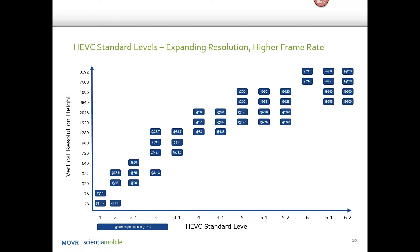What we actually deliver back to the device once we've identified that it can use HEVC is based on the standard level. There are different standard levels — 1 through 6, 6.1, 6.2 — and the standard continues to evolve. The higher you get in the standard level, the larger the resolution. For example, at standard level 4, it has the ability to render video at 1280 resolution and at 68 frames per second, with larger versions available as the level increases.